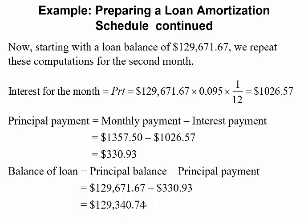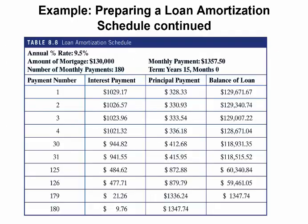I will post a link to an amortization calculator above this video in the classroom so you can use that tool to have the website calculate this for you. Processing this out, you can see the payment number, how much is going towards interest, how much towards principal, and the balance of your loan. As the number of years go on, your interest is being decreased and your principal is being increased. That's how a mortgage is done — they front-load it so you pay off all the interest first and then start paying more and more towards the actual principal of your loan.